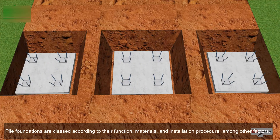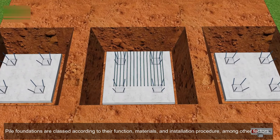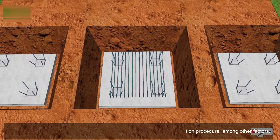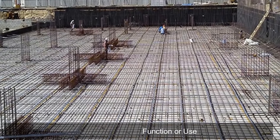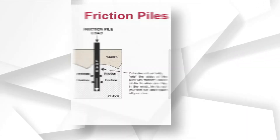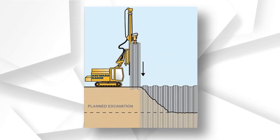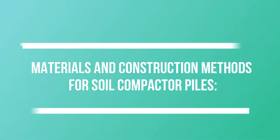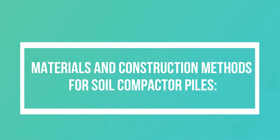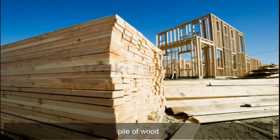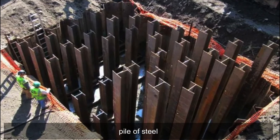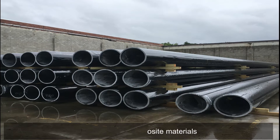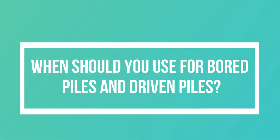Pile foundations are classified according to their function, materials, and installation procedure. By function: load-bearing piles, end-bearing piles, friction piles, and sheet piles. By materials and construction methods: soil compactor piles, wood piles, concrete piles, steel piles, and piles made of composite materials.